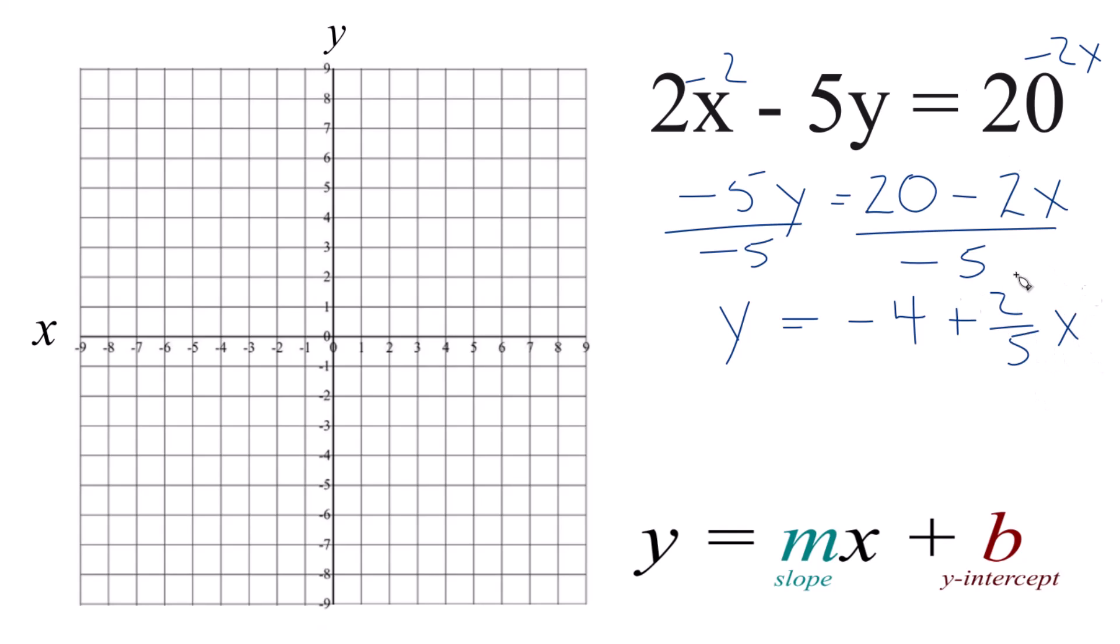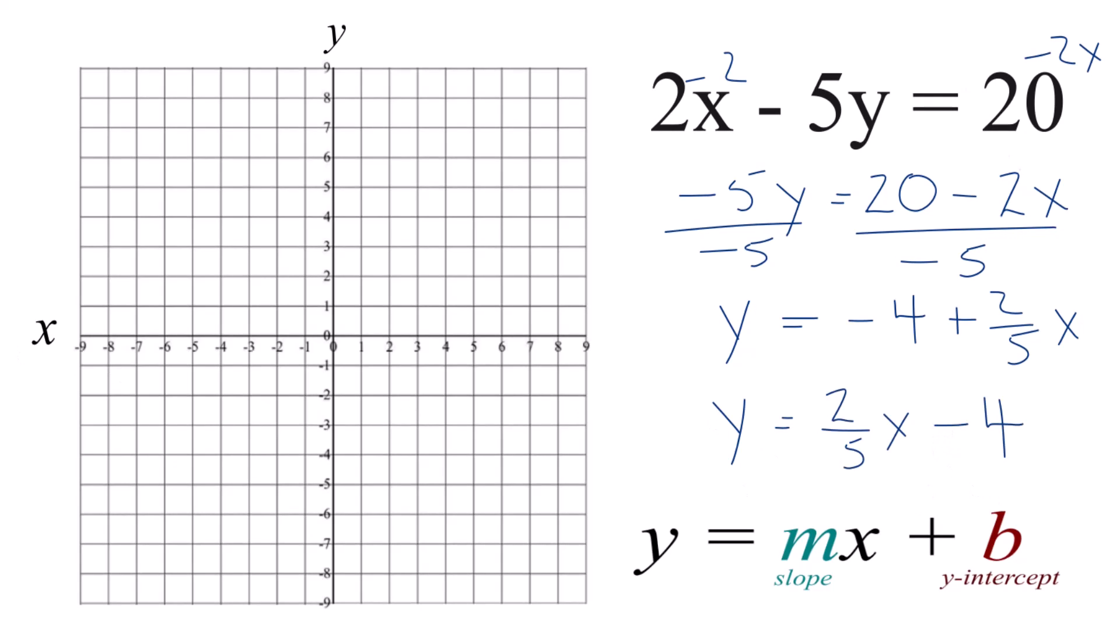So let's put x first, so we have it like slope intercept form. And now this is pretty easy to graph. We have our y-intercept negative 4, so we go to the y-axis down to negative 4. That's where the line goes through the y-axis.